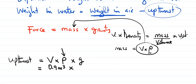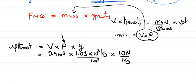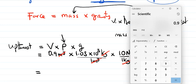The density of seawater is 1.03 times 10 to the power 3 kilograms per meter cubed. We multiply this by gravity, which is 10 newtons per kilogram. The units: meter cubed cancels with meter cubed, and kilograms cancel with kilograms, leaving newtons. So we have 0.9 multiplied by 1.03.